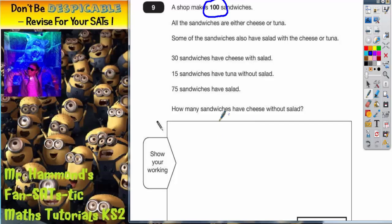Now at this point, it's important to realize that there are only four types of sandwich here. We've got cheese with salad. We've got cheese with no salad.